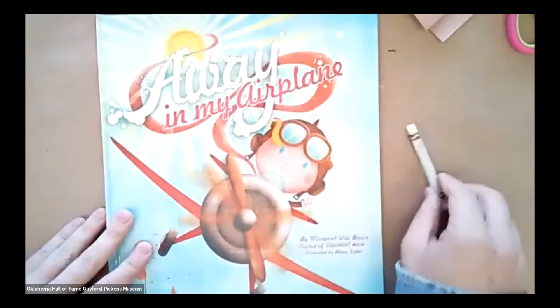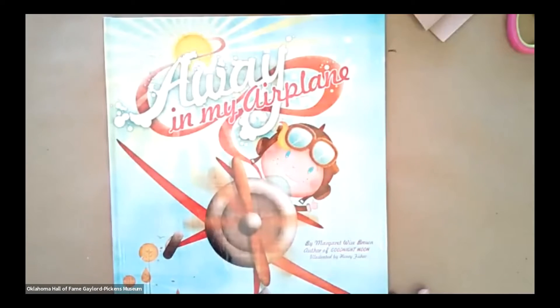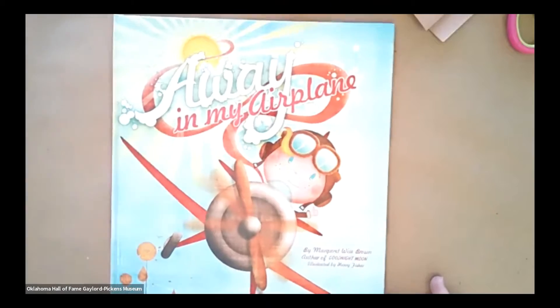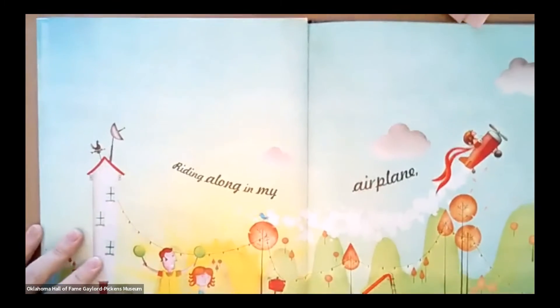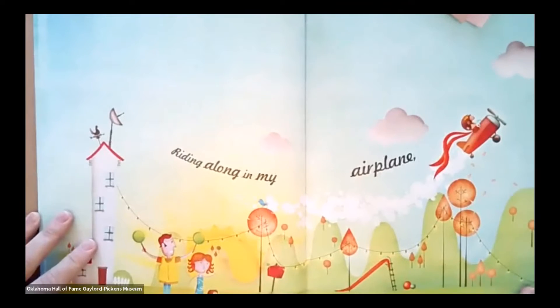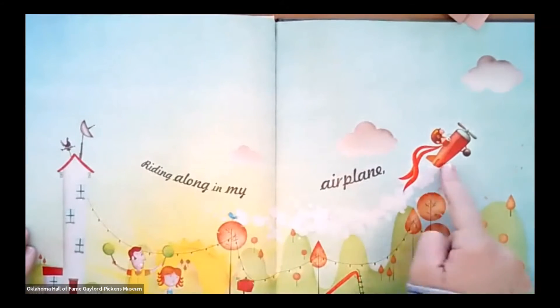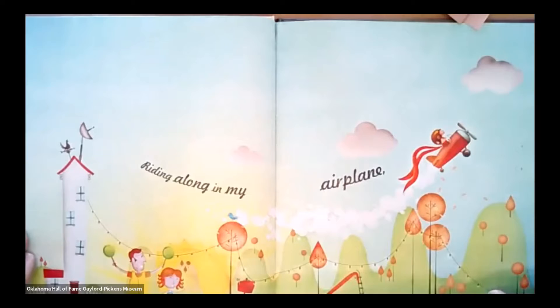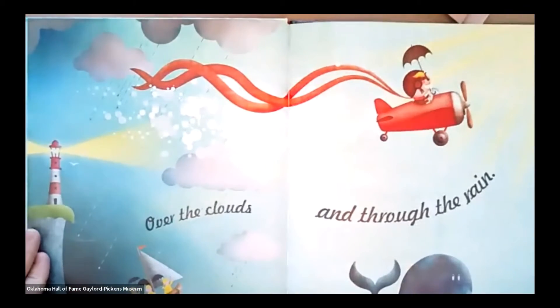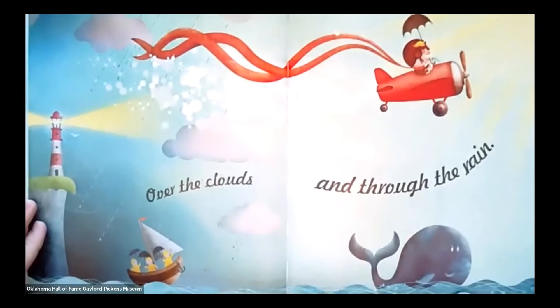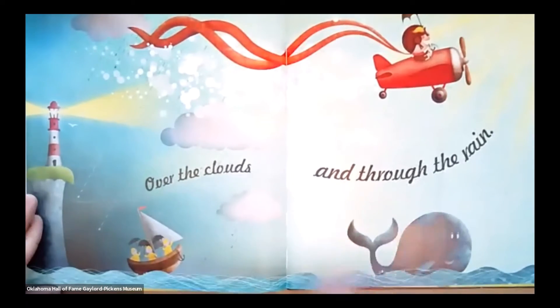Today we are reading Away in My Airplane by Margaret Wise Brown, illustrated by Henry Fisher. Riding Along in My Airplane, there they are in the airplane, over the clouds and through the rain. So there's even the ocean there at the bottom of the whale.